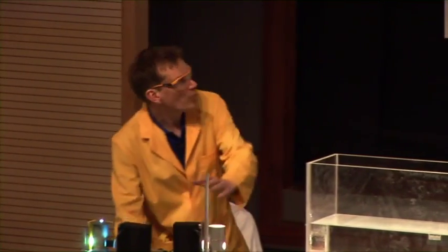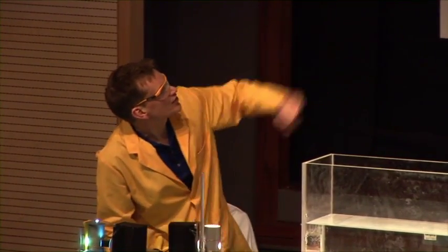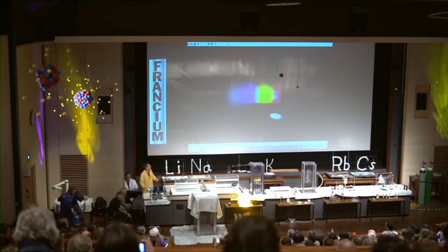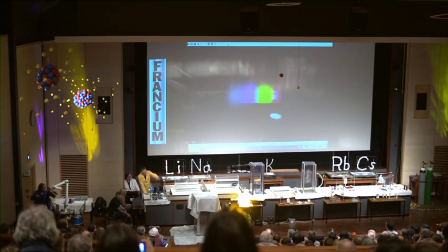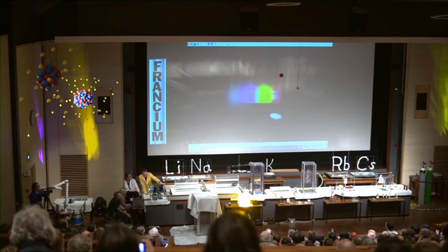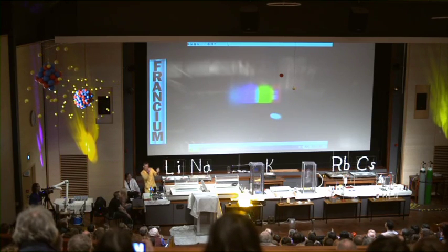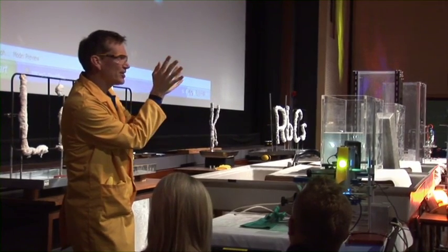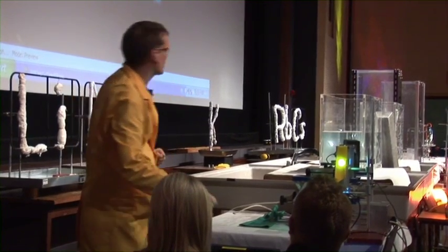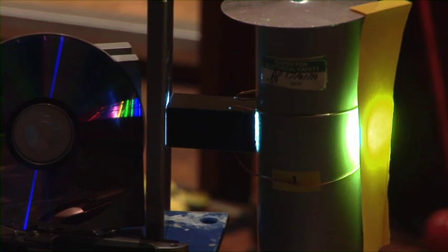If we take a normal lamp — this is a normal filament lamp — and we split up all the colours that come out from this, what we would see is the spectrum, a rainbow of all the colours like we see on the screen here. We're actually shining the lamp just on the corner of a DVD, and this is splitting it all up into the colours of the spectrum. So this is normal white light.